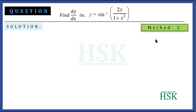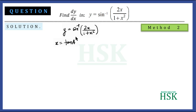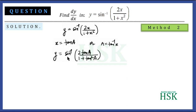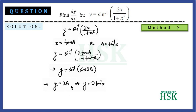Now for Method 2. We take y = sin⁻¹(2x/(1+x²)) and make the substitution x = tan a, which means a = tan⁻¹x. So y = sin⁻¹(2 tan a/(1+tan²a)). Since 2 tan a/(1+tan²a) = sin 2a, the expression becomes y = sin⁻¹(sin 2a). The sin⁻¹ and sin cancel, giving y = 2a = 2 tan⁻¹x.